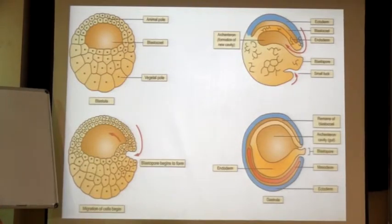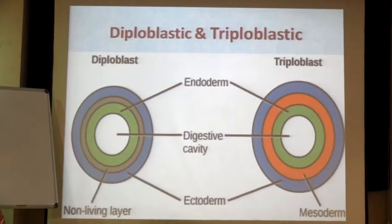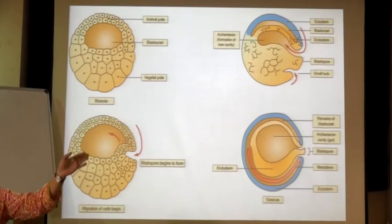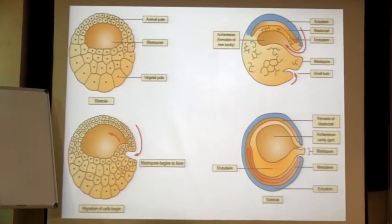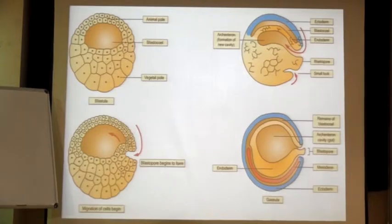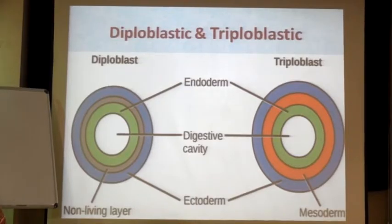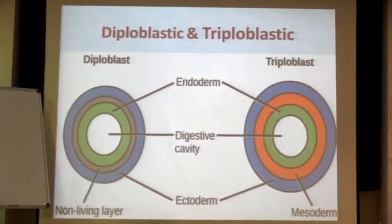These germ layers are very very important — that is how you divide your organisms into diploblastic and triploblastic. When you say an organism has two germ layers, it is a long procedure going from zygote to gastrulation stage. If cells make three different layers in gastrulation, it is a triploblastic organism; if they make two different layers, it is a diploblastic organism.